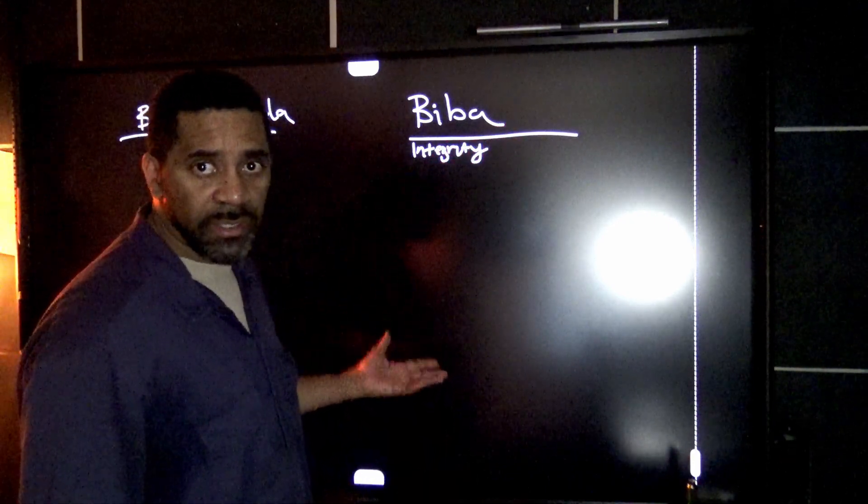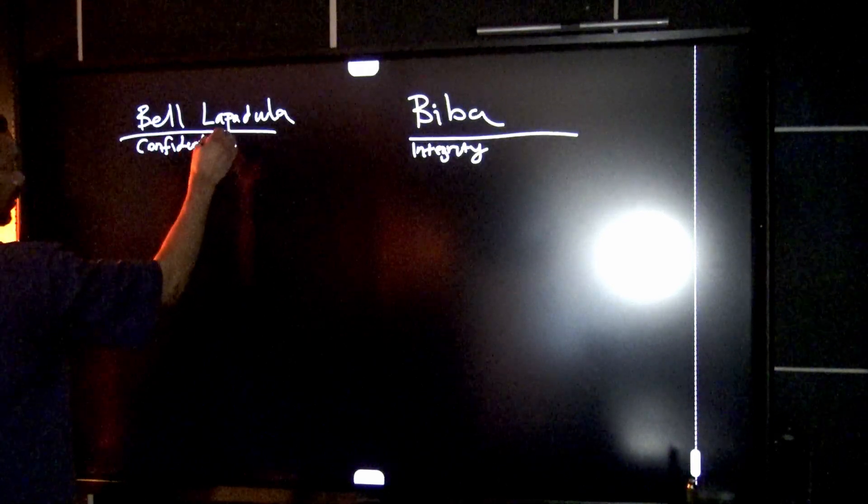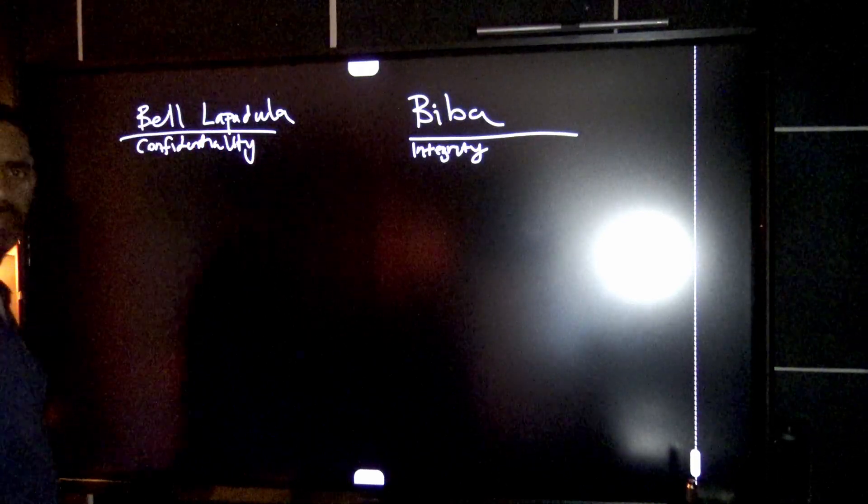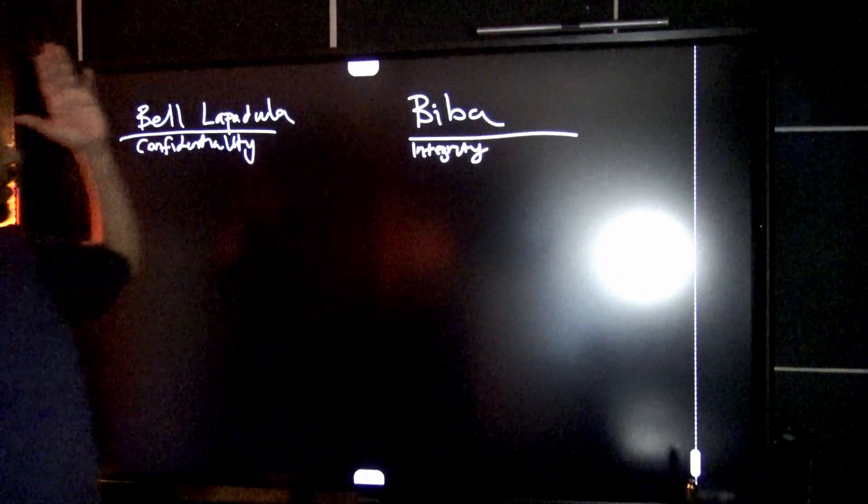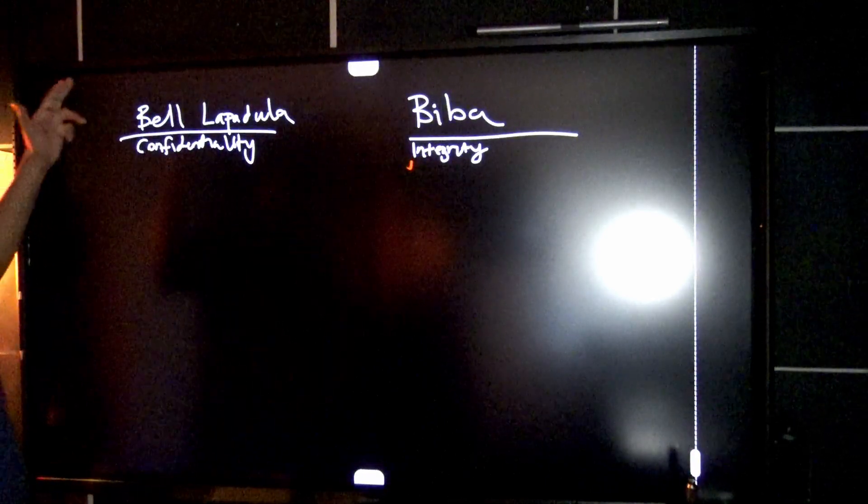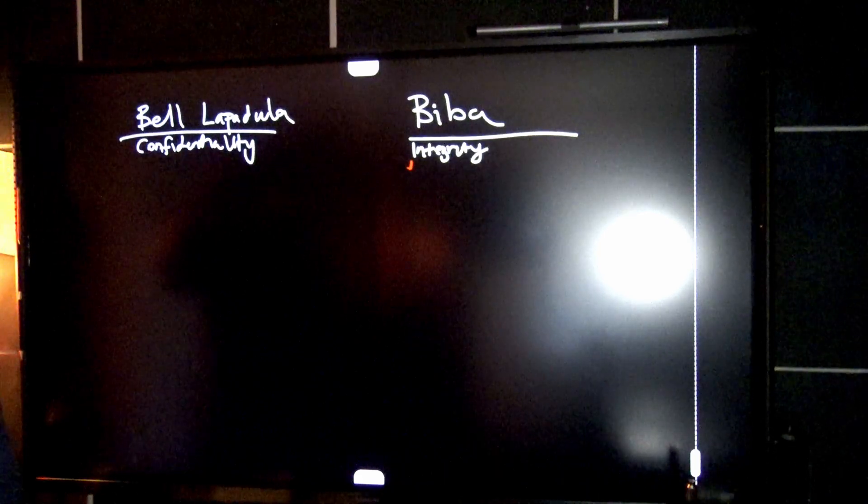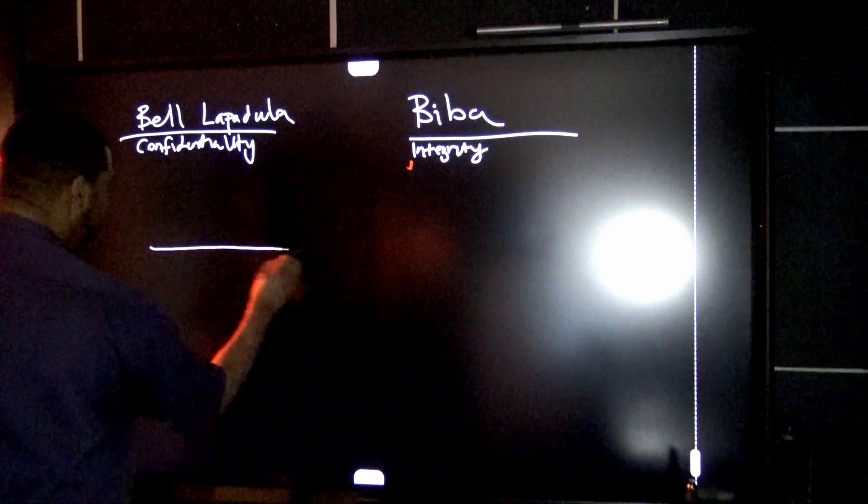And what's the other one? Confidentiality. Those are our two models that we're gonna focus on on this test. So we're gonna start off with Biba, our integrity model, and we're gonna focus on Bell-LaPadula, our confidentiality model. After you get these on the screen, then you're gonna draw two lines under each, just like that.